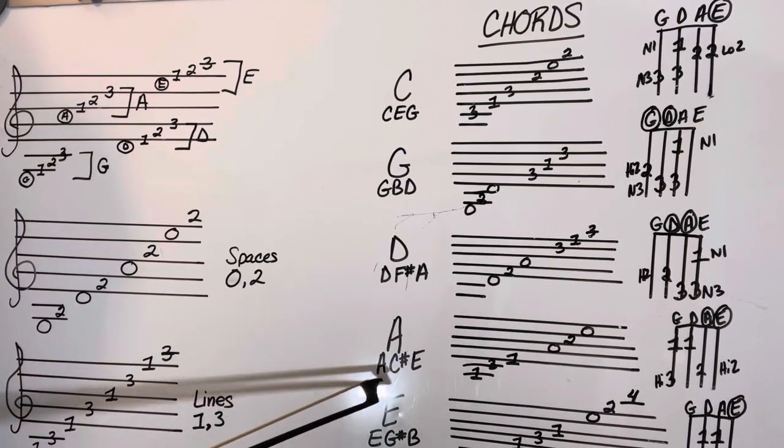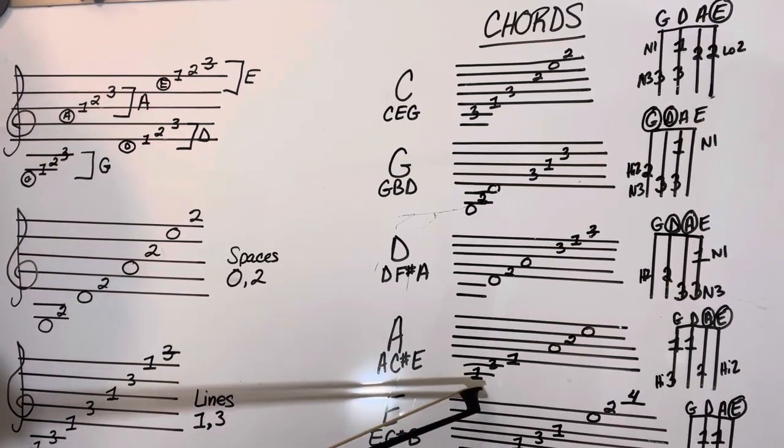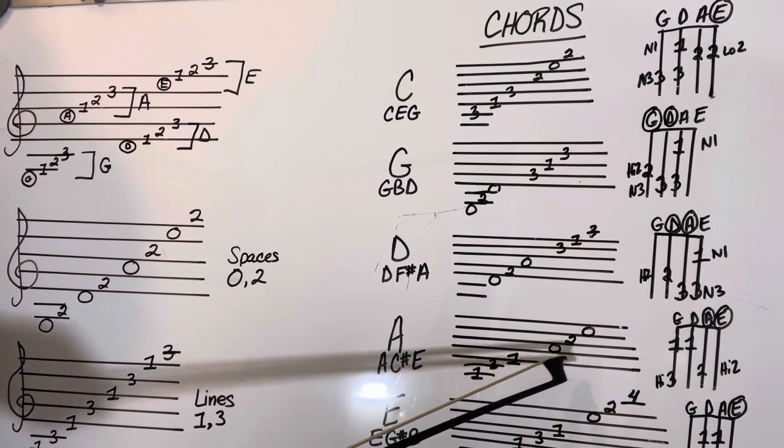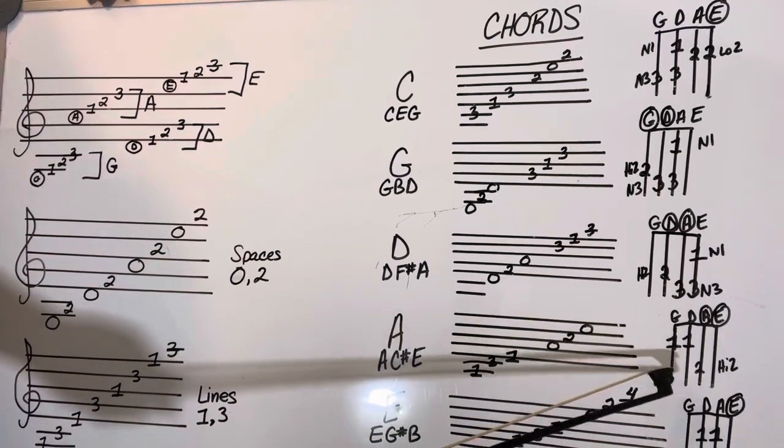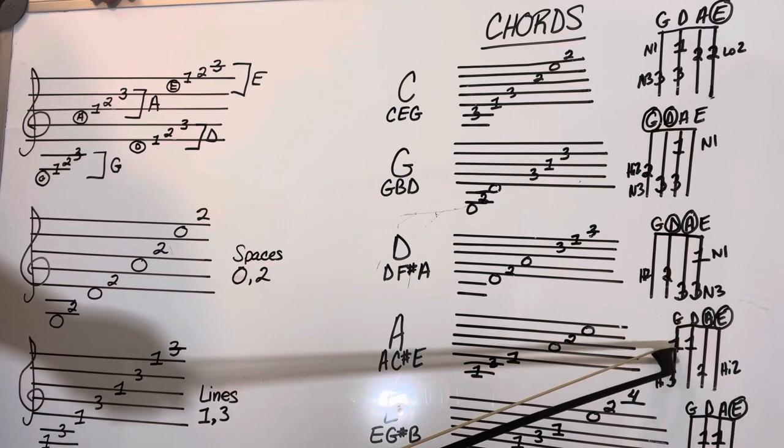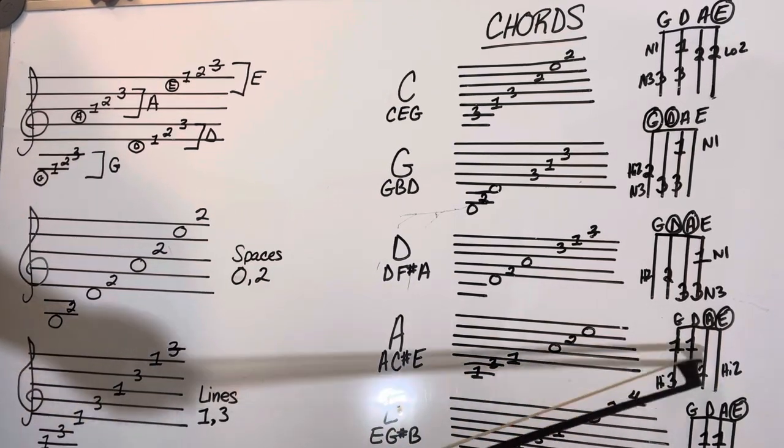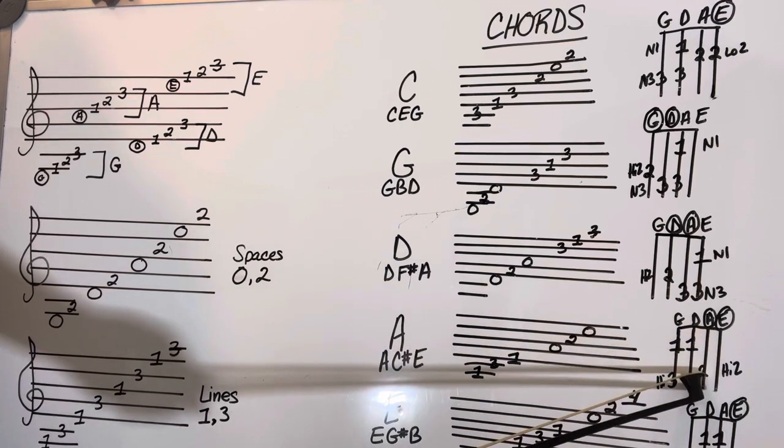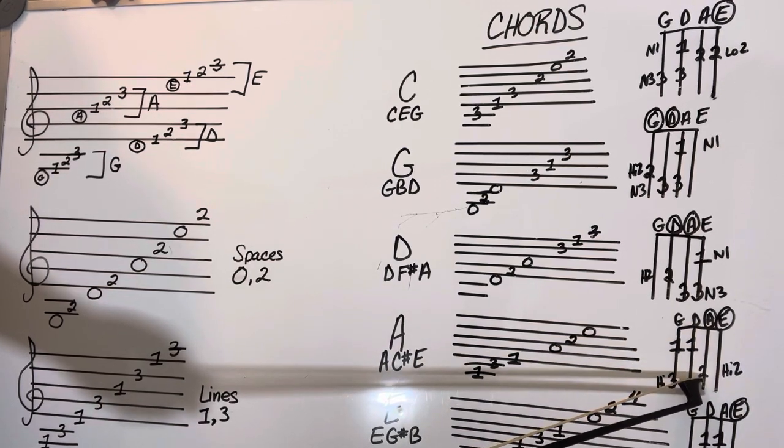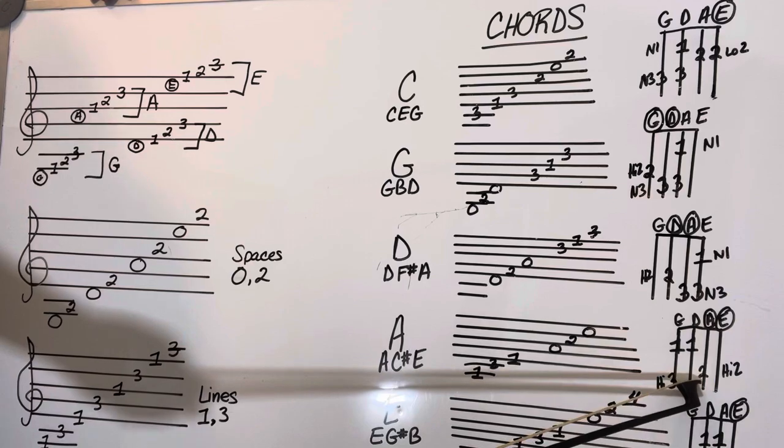Here's A, which is A-C sharp-E. Here's 1-3-1 or open 2-open. And here's our little finger chart - one, high three because it's a C sharp in our key signature, one, or high two, A high two C sharp E.